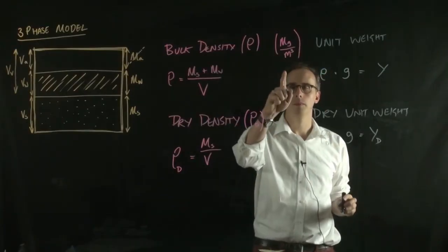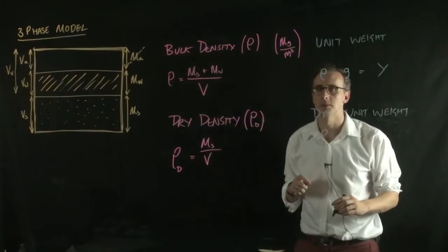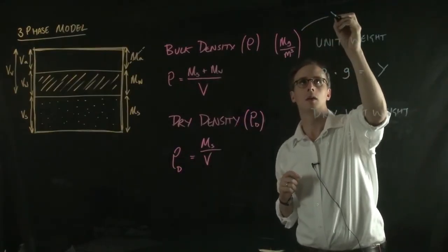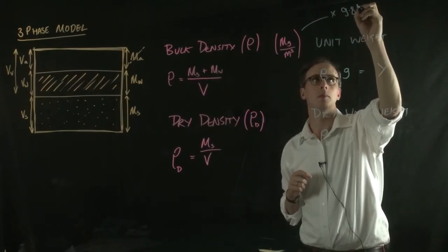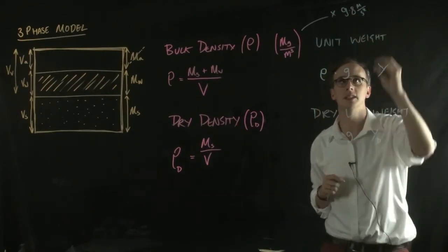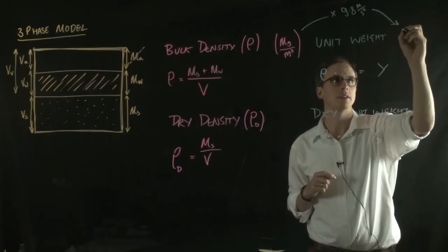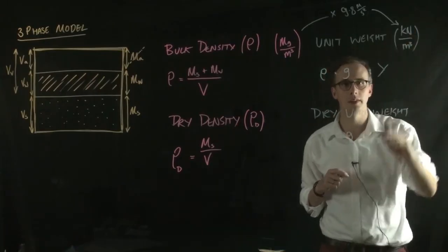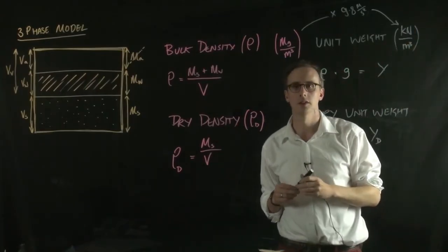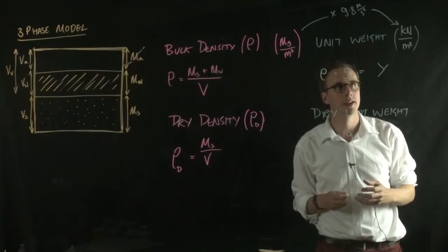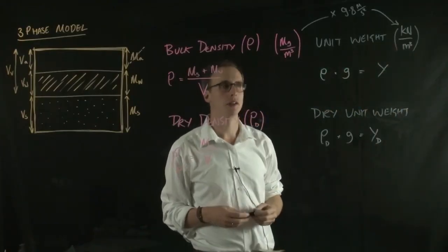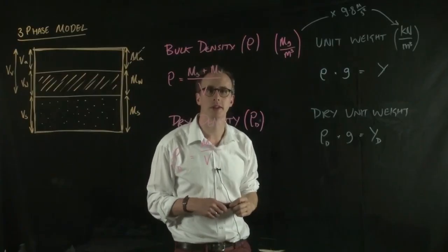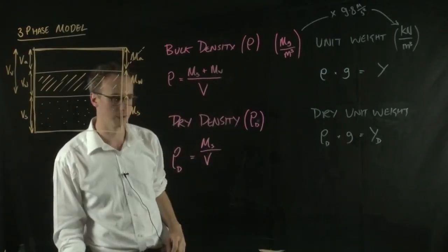Now, the reason why we put this in megagrams per meter cubed, because if we multiply that by 9.8 meters per second squared, the acceleration due to gravity, the unit that comes out is in kilonewtons per meter cubed. And that's for both the dry density and the dry unit weight and the unit weight. And the kilonewtons per meter cubed is quite a useful unit in soil mechanics. So that's why we express the density in megagrams per meter cubed for the bulk density and the dry density.